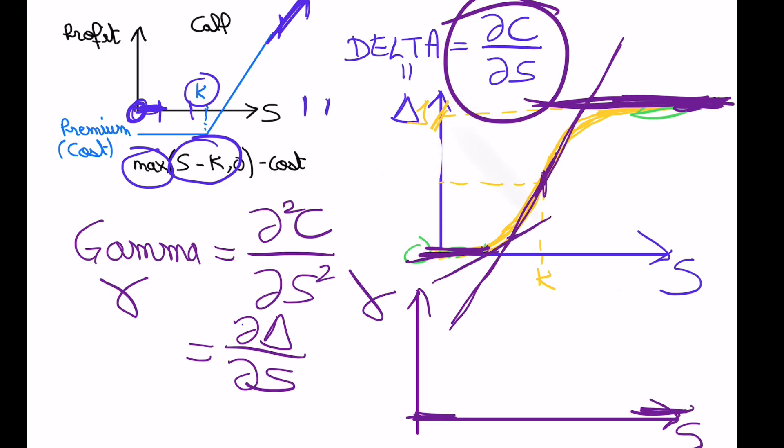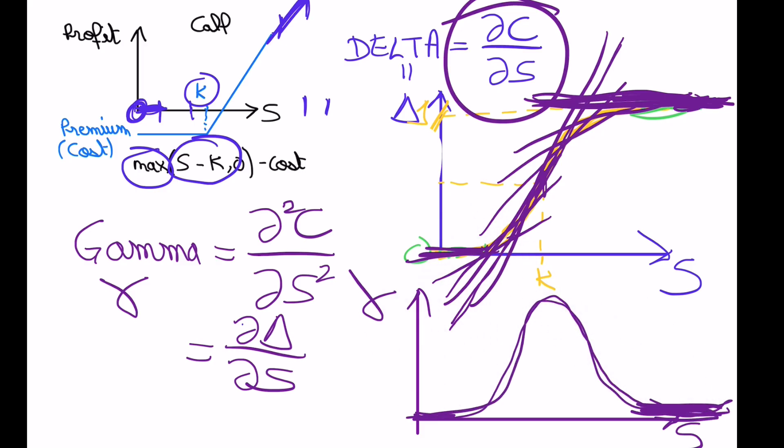Here it goes up slower, slower, slower. Here's the max. And then it goes up slower, slower, slower to zero. So it's something like that. That's your gamma.